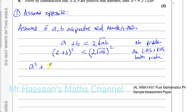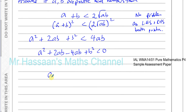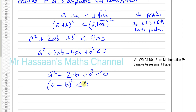Squaring the left side gives A squared plus 2AB plus B squared, and squaring the right side gives 4AB. Bringing 4AB to the left side gives A squared plus 2AB minus 4AB plus B squared less than zero, which simplifies to A squared minus 2AB plus B squared less than zero.